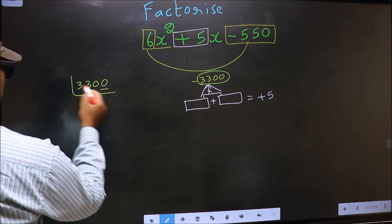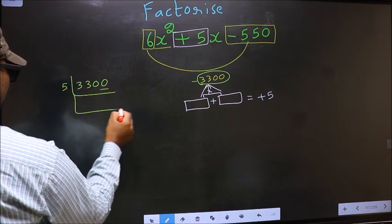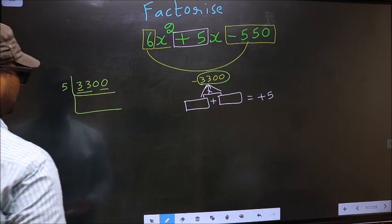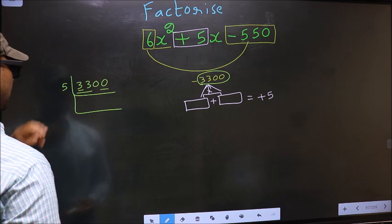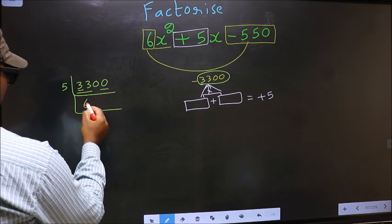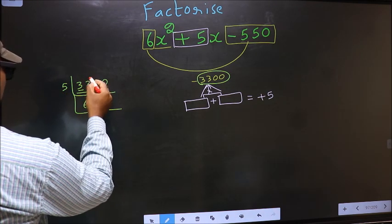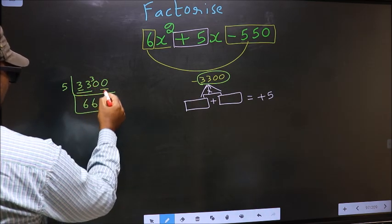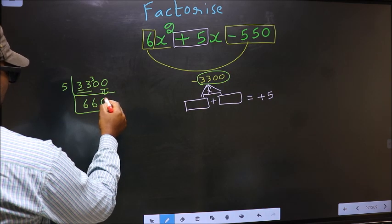The last digit 0, so take 5. The first number 3, smaller than 5, so take 2 numbers 33. A number close to 33 in 5 table is 5, 6 is 30. 33 minus 33, 3 carried forward 30. When do we get 30 in 5 table? 5, 6 is 30. Now this 0 as it is down.